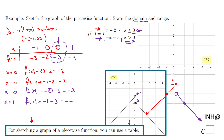Now for the range — the range means the y-values we get out of this function. Looking at the graph, y is any number less than or equal to negative 2; nothing greater than negative 2 comes out. In interval notation, the range is negative infinity to negative 2 with a bracket, since negative 2 is included: (−∞, −2].